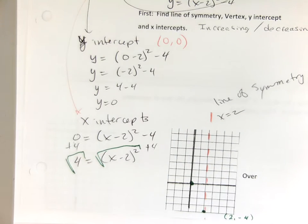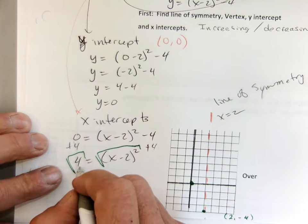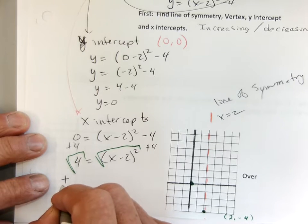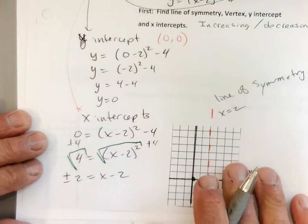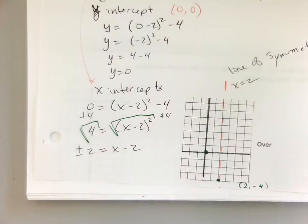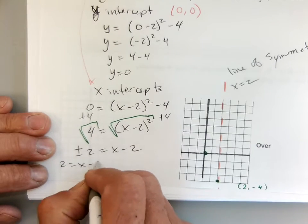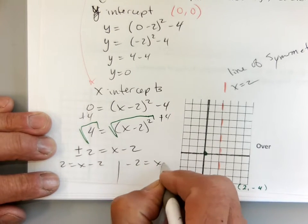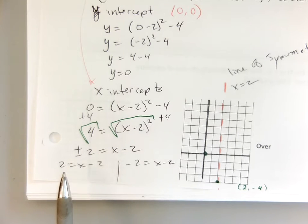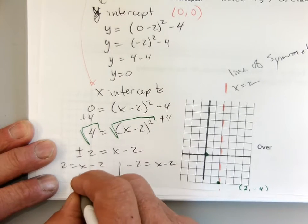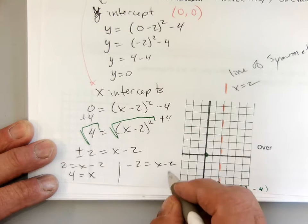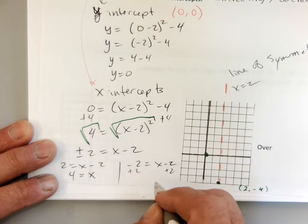How many x-intercepts are there normally? 2, right? So to get two answers, the square root of 4 is 2 and negative 2. My two equations are: 2 equals x minus 2, and negative 2 equals x minus 2. So x equals 4 is one x-intercept, and x equals 0 is the other.